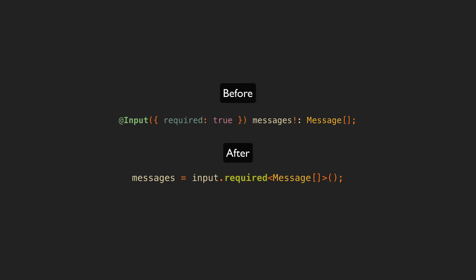We can now create inputs with the input function, rather than an input decorator like this. Which is already a massive improvement just from an API perspective, but the important part — at least for me — is that it allows us to react to inputs changing declaratively.